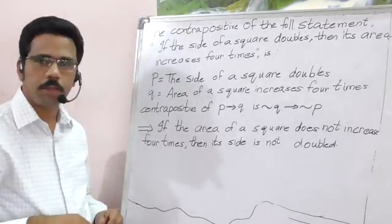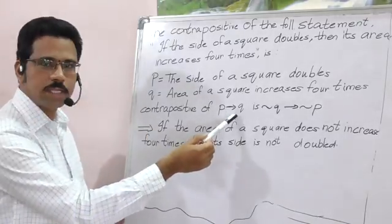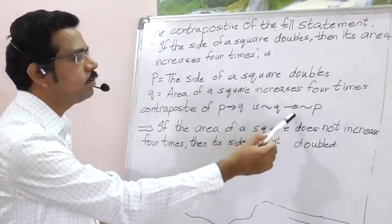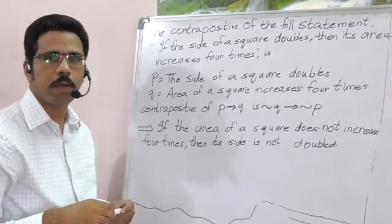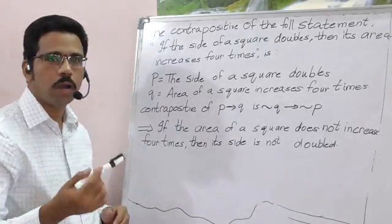Now here contrapositive is nothing but, if P implies Q, what is contrapositive for P implies Q? That is negation Q implies negation P. So negation means just rewrite the sentence by applying negativity, that is by applying no or not.